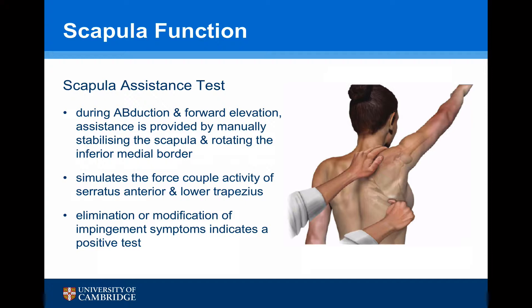I like to use two tests to assess this. The first is the scapular assistance test. The surgeon stands behind the patient, and during abduction and forward elevation, assistance is made manually by stabilising the scapula and rotating the inferior medial border superiorly. This simulates the forced scapular activity of serratus anterior and lower trapezius. If there is elimination or modification of the impingement symptoms, it indicates a positive test and shows that there is certainly a scapulothoracic component to the shoulder problem. It is essential that this is corrected for there to be successful treatment of the glenohumeral pathology.